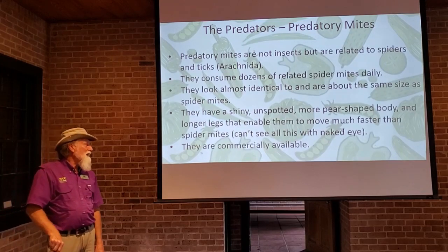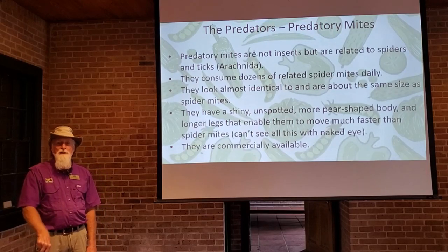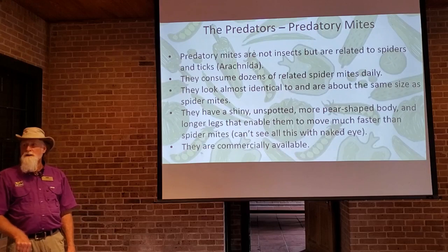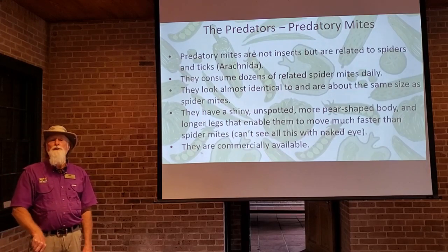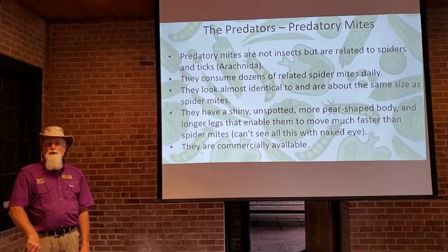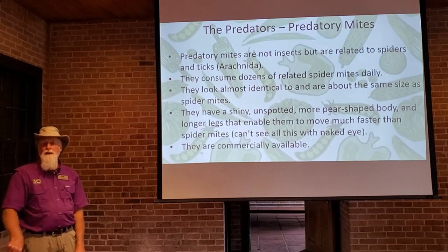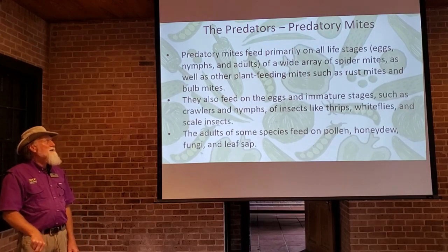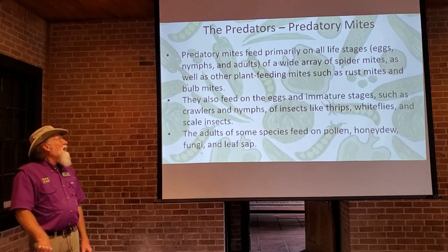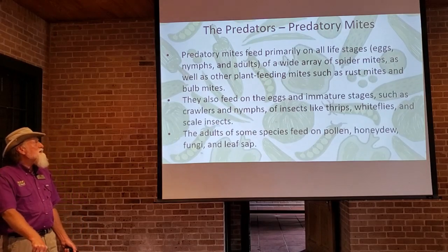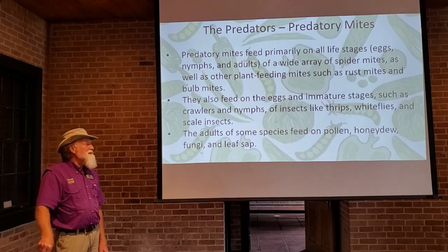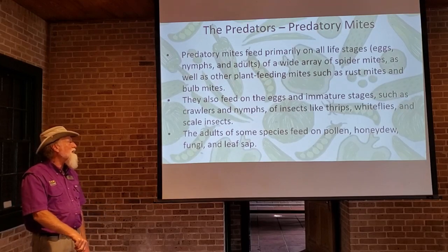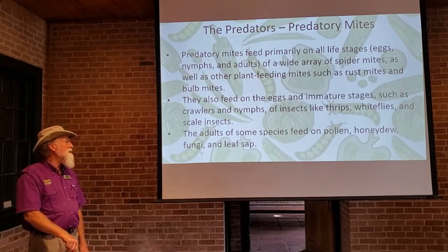Predatory mites are commercially available, so you can buy living organisms like predatory mites and release them into your garden to help control the bad guys. They'll feed on all stages of spider mites — eggs, nymphs, and adults — and they'll also feed on eggs and immature stages of thrips, whiteflies, and scale insects. The soft-bodied bad guys like thrips, whiteflies, and scale insects can all be controlled by predatory mites.